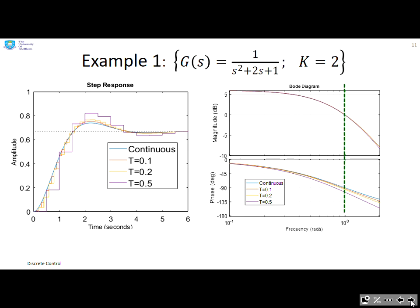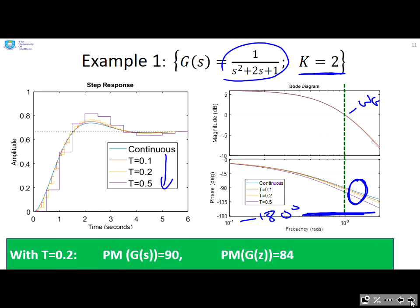Here's the examples then. You can see I've got a simple G(s) up here and a simple proportional compensator, and I've done the Bode diagrams on the right. Now what do you notice about the phase diagrams near the gain crossover frequency, which is the critical point? You can see that you're much closer to this -180 degree line, and therefore your phase margin is worse, and it gets worse as T increases. Here's some numbers. With T=0.2, the phase margin for the continuous system was 90, and with the discrete system 84. So you've lost six degrees of phase margin.